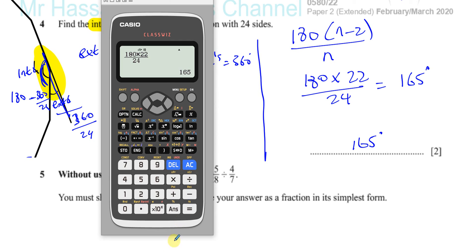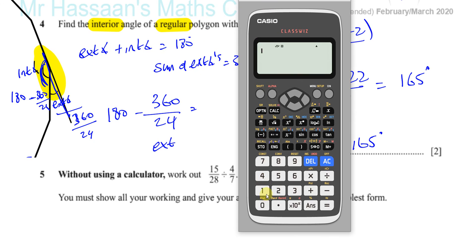So if I did 180 minus 360 over 24, I hope you'll see that we get exactly the same answer that we got the other way, but this, I think, is a bit more of a simpler method, 360 over 24. You get the same answer, 165 degrees.